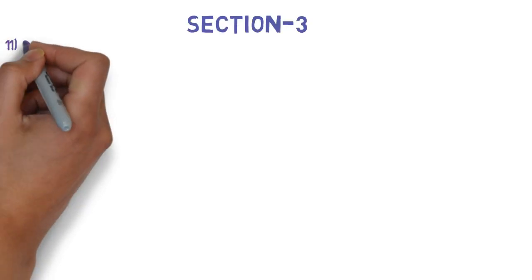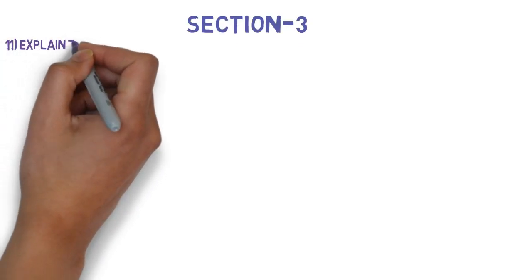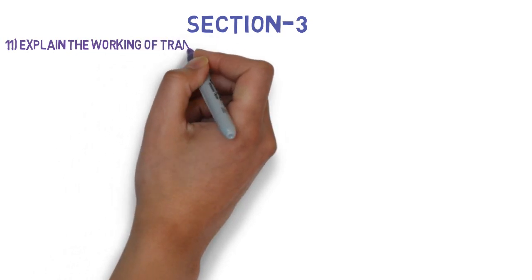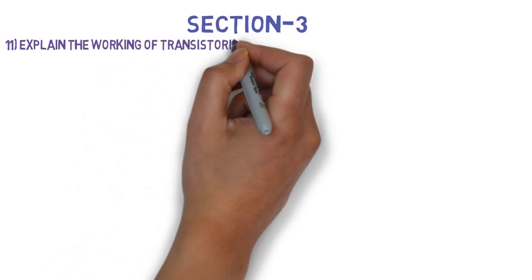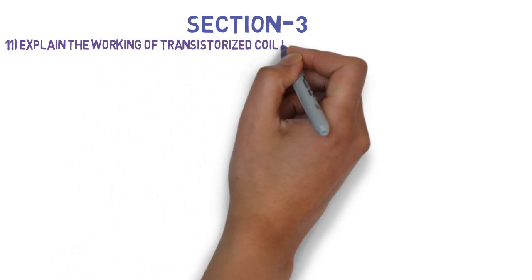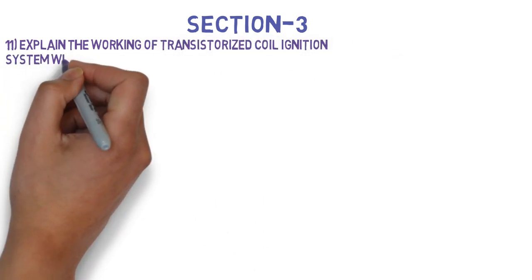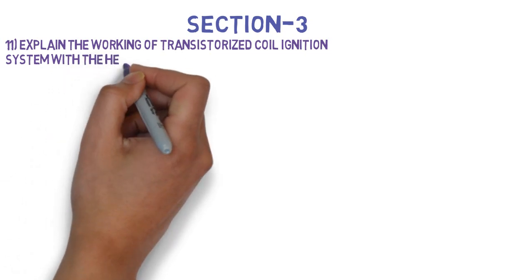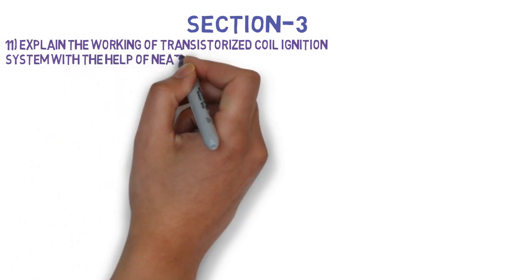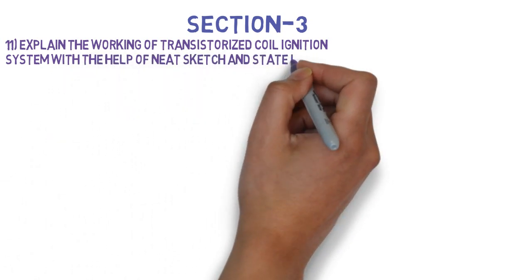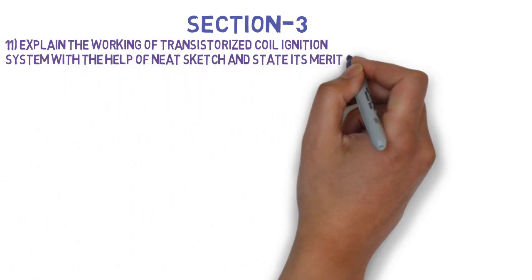Let's go to Section 3 wherein the first question is: Explain the working of transistorized coil ignition system with the help of a neat sketch and state its merits and demerits. This can come for 10 marks.